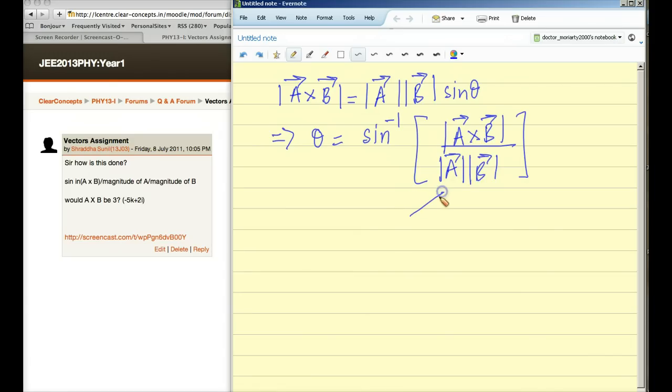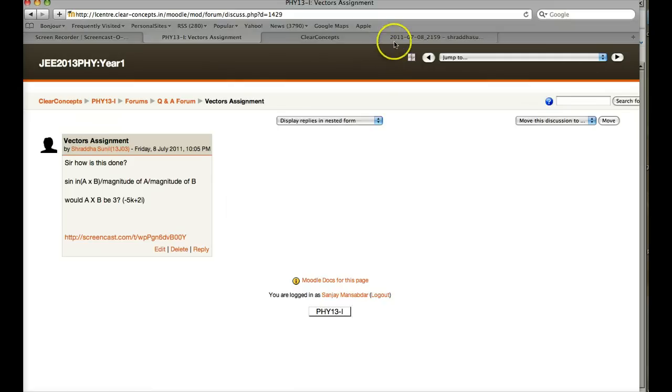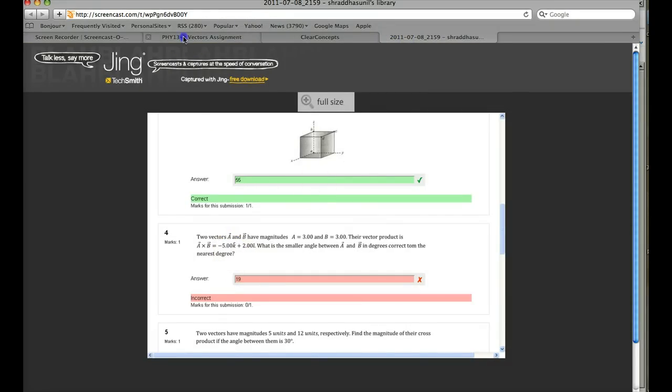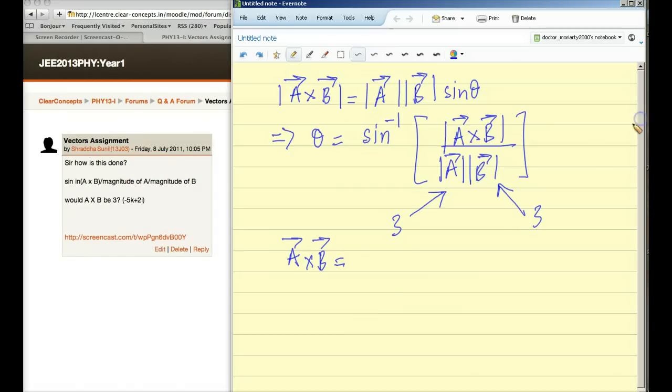You've already been given that magnitude of a is 3 units, magnitude of b is 3 units. And you've been given what the vector a cross b is. And this has been given as, let's go back and see, it's minus 5k plus 2i. Here we go. So, minus 5k plus 2i.